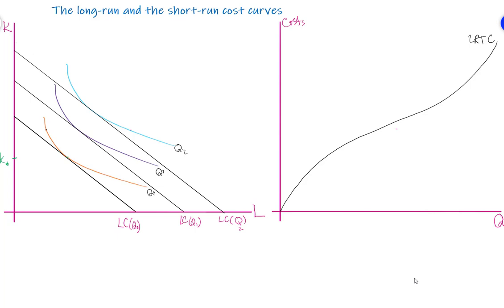Now suppose the firm is in the short run and there is a constraint on capital — that is, capital is fixed. The firm has to produce output level Q-naught with capital fixed at K-naught. In this case, the tangency condition is met at the point where the long-run equilibrium exists, which implies that our long-run cost and the short-run total cost coincide.